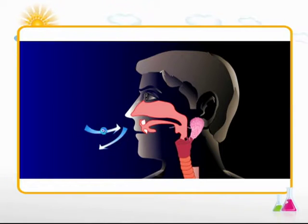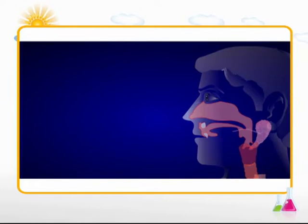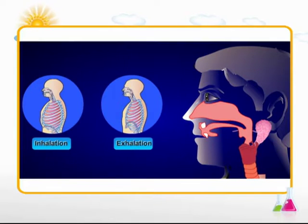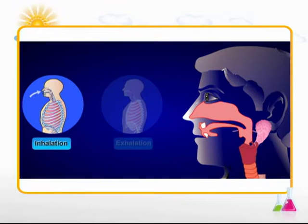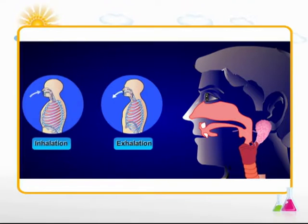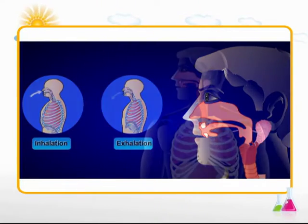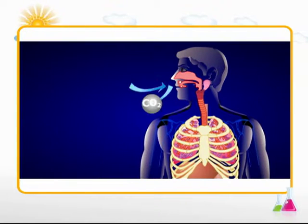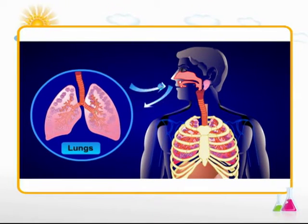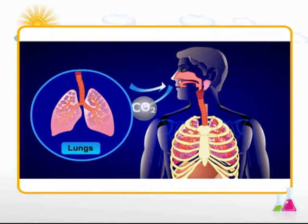When we breathe or take a breath, we take in oxygen and give out carbon dioxide. Breathing occurs in two phases: inhalation and exhalation. Inhalation is breathing in oxygen from the air; exhalation is breathing out carbon dioxide into the air. These are carried out by special body organs called lungs. The lungs expand when we breathe in and contract when we breathe out.